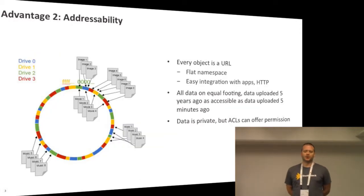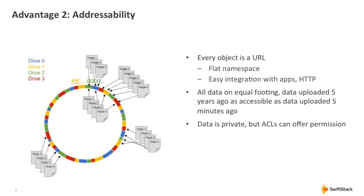The next major feature is what we call addressability. Everything in Swift is a URL. Swift is just a giant web server with a flat namespace. Everything is addressed with a URL, so different than a traditional file or SAN block storage, object storage uses URLs. It's a different way of thinking about things — very easy integration with HTTP apps, designed for the future with mobile and leveraging HTTP. It's a great way to leverage this type of storage system for the scalability and need that you have from storage.